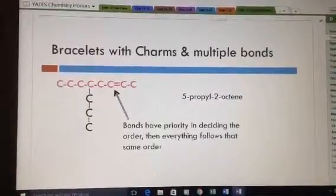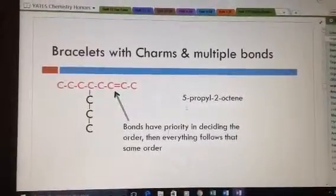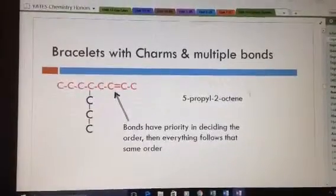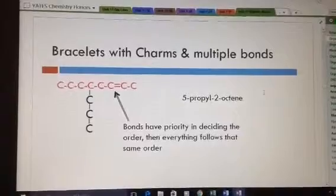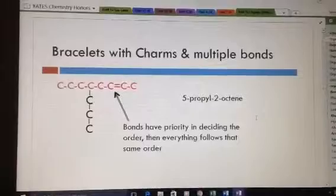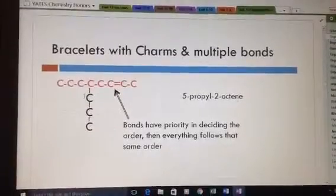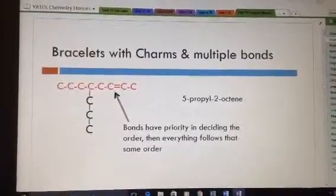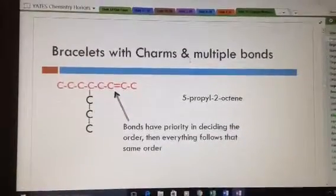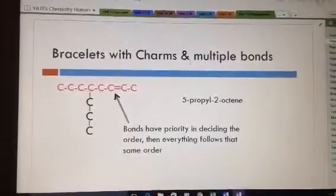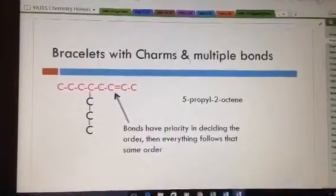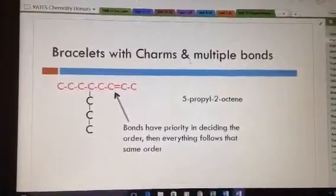Okay, how do I decide how to name something that has charms and multiple bonds? Well, first of all, the multiple bonds take precedence. So however I've already numbered that to determine where to label for the double bond is now the permanent numbering. So it makes it a little bit easier once you've numbered something that has double or triple bonds in it, that remains to be the same order that you order everything else in.